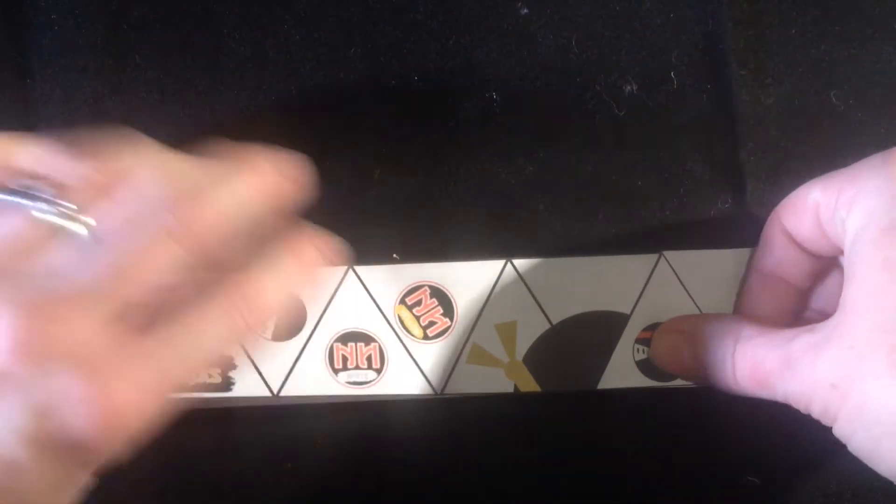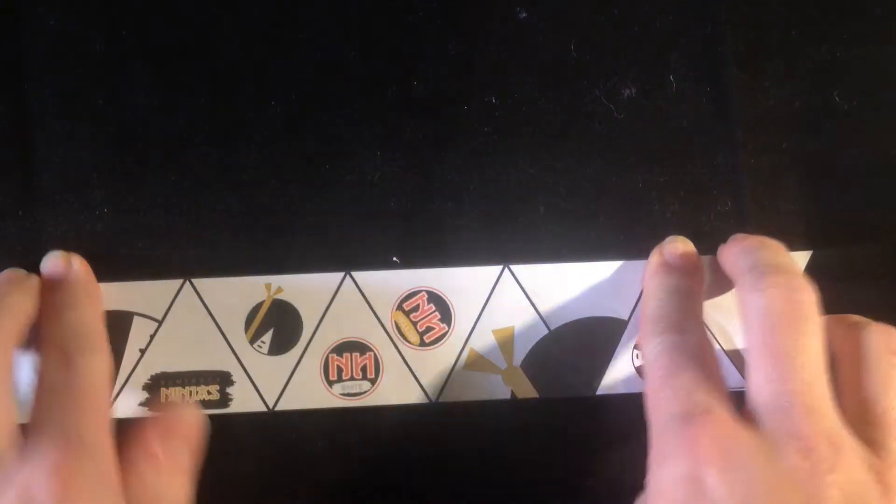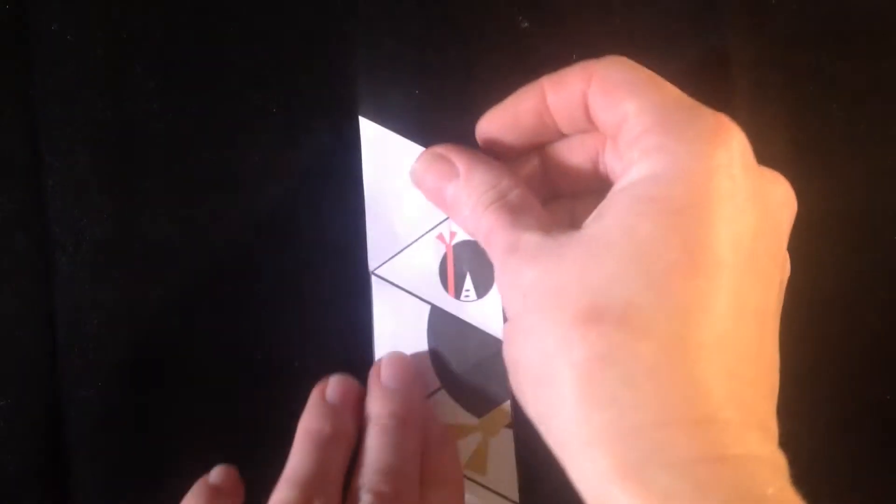After you've cut out your Trihexaflexigone you need to start to fold it. Firstly fold it in half along the length. It's important to be as accurate as you can be when folding as this will help later on.